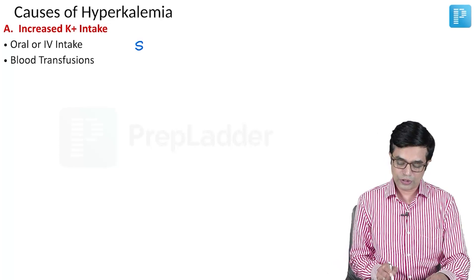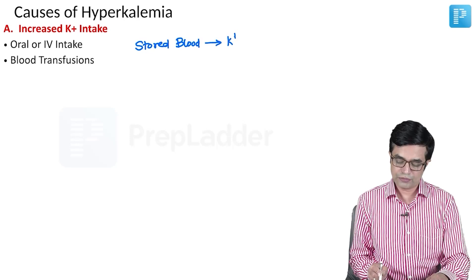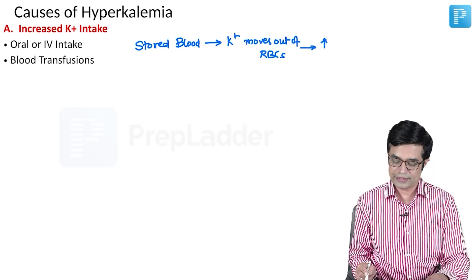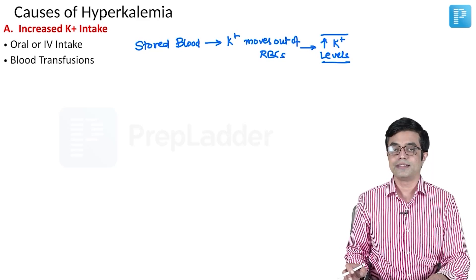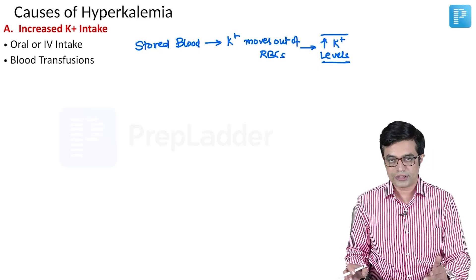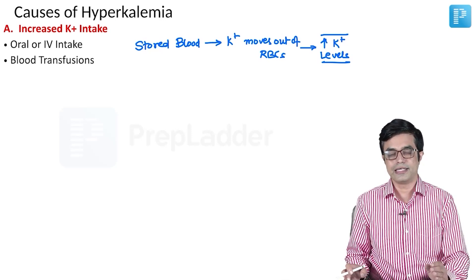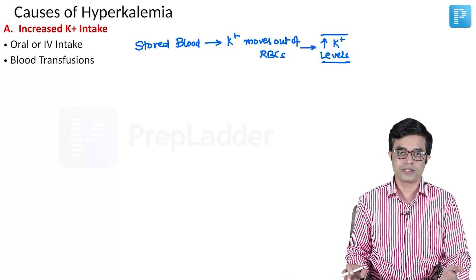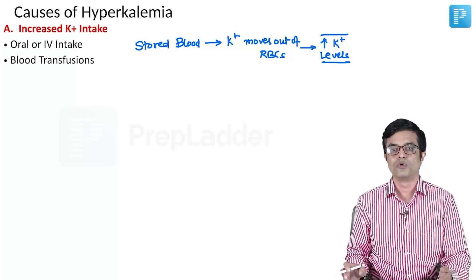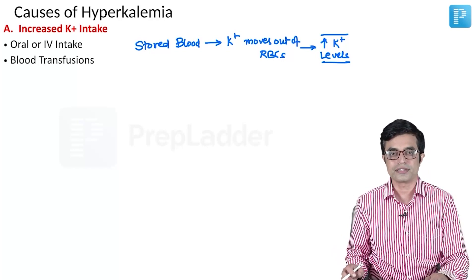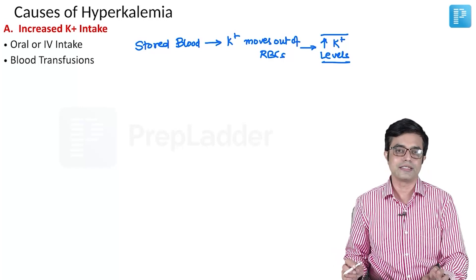Whenever there is storage of blood, potassium — being an intracellular ion — moves out of RBCs. This potassium moving out of RBCs produces an increase in serum potassium levels in stored blood, and when this high-potassium blood is given, it raises serum potassium levels. In case of fresh blood, chances of hyperkalemia are relatively less. For stored blood products where RBCs have been stored for more than 36 to 48 hours, serum potassium levels are significantly elevated.